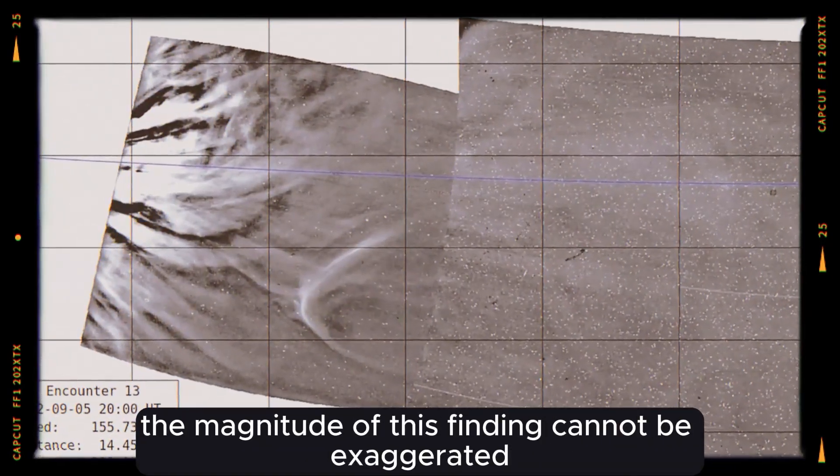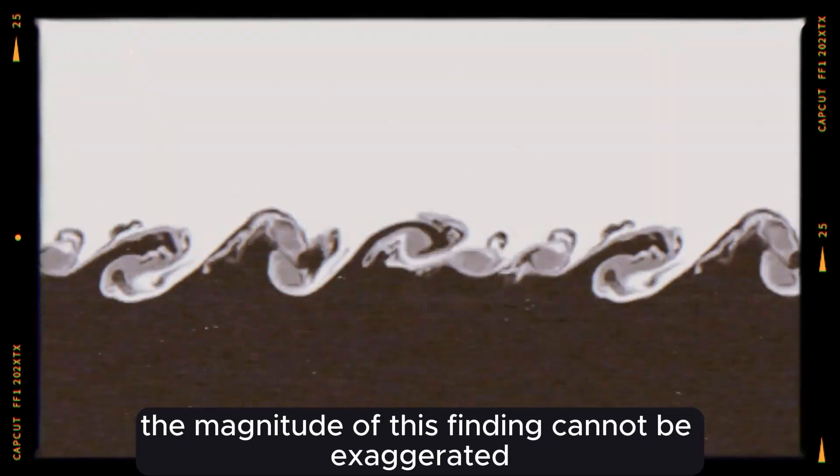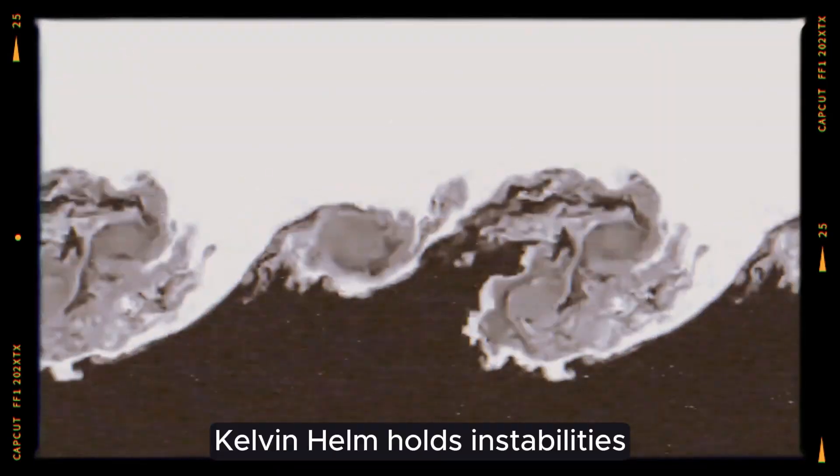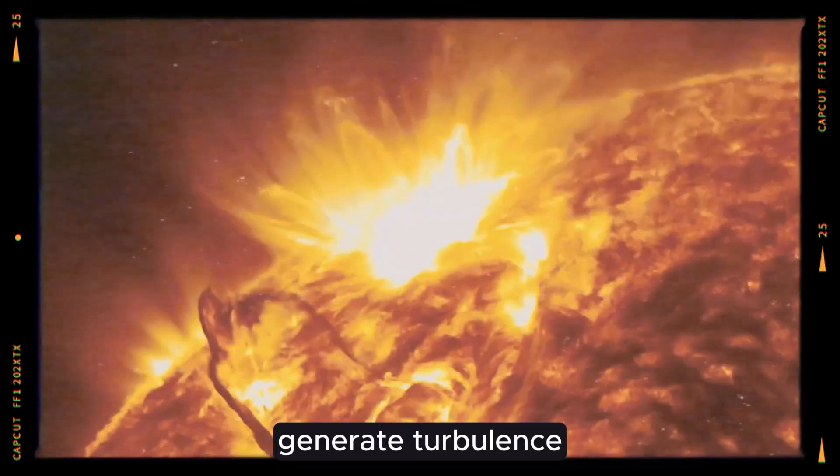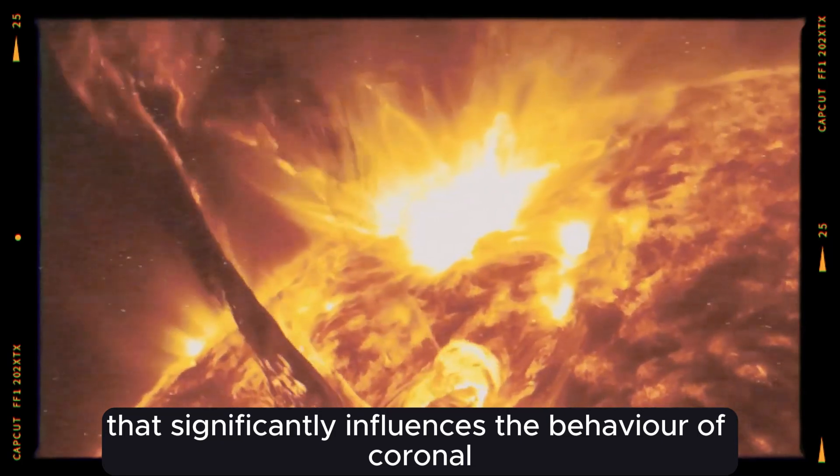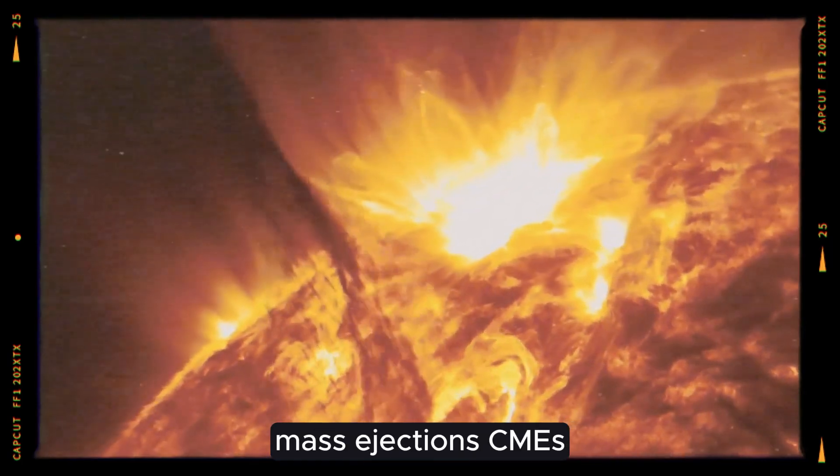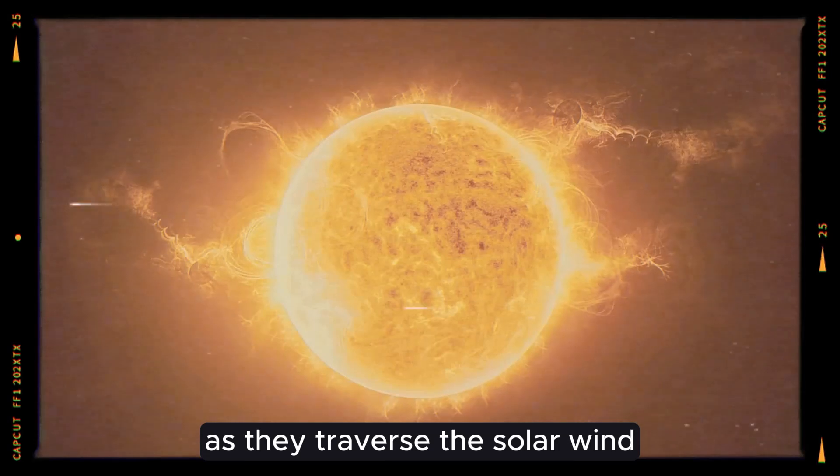The magnitude of this finding cannot be exaggerated. Kelvin-Helmholtz instabilities generate turbulence that significantly influences the behavior of coronal mass ejections, CMEs, as they traverse the solar wind.